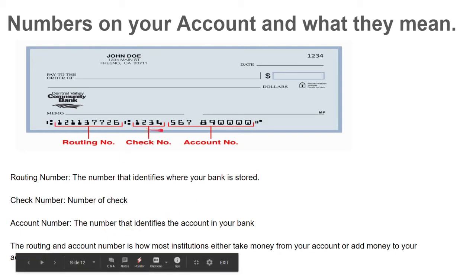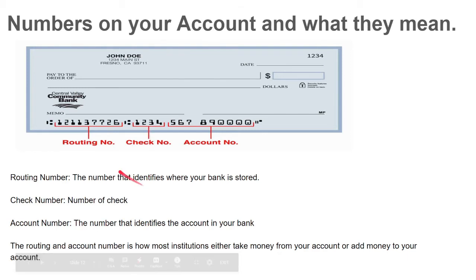The check number is just the number of your check. The routing number and account number are what institutions need to take money from your account or to deposit. So if you want to sign up for direct deposit from your job, you'll need your routing and account number. Similarly, if you want to pay your bills directly from your account, you give them the routing and account number.